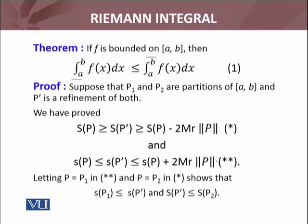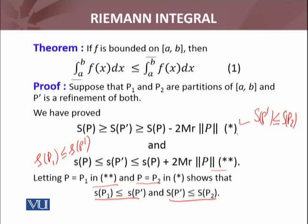Now we have to play very intelligently. Letting P equal P₁ in the double asterisk, if you take P equals P₁, then I have lower sum P₁ less than or equal to the refinement lower sum of P'. This is what's written here. Similarly, if P equals P₂ in the asterisk, then I have s(P') less than or equal to s(P₂). These two inequalities that we already proved for a refinement obtained by adding r terms—we're using these to write down these two inequalities.